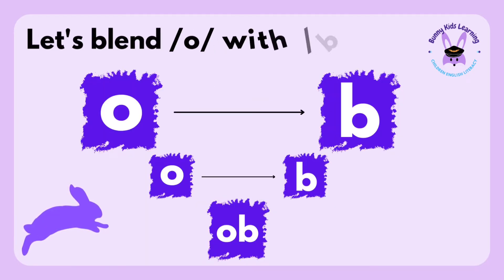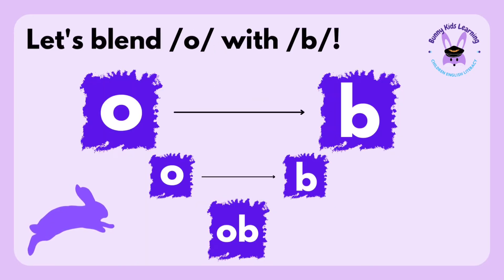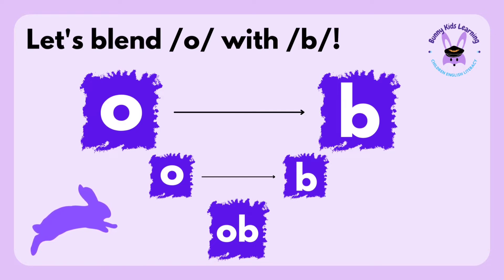Now, let's try to blend the letter O with the letter B. The sound of the letter O is O. The sound of the letter B is B.